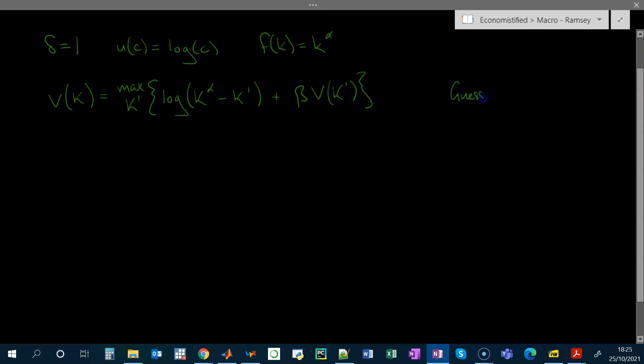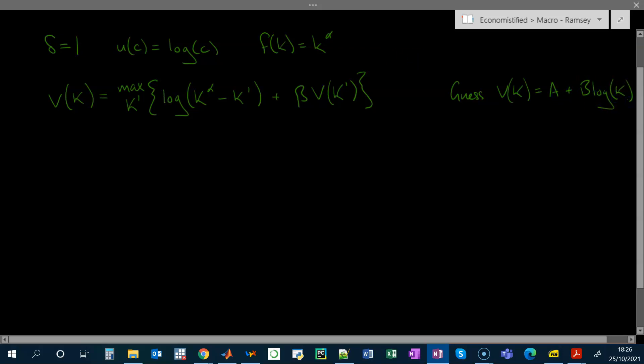I'm going to guess that the value function has this form: a constant plus something that is proportional to the logarithm of k. So this is the guess part. How do we do the verify? We verify by plugging in the guess into the Bellman equation, taking the first order condition, finding the optimal choice of capital, and then plugging that back into the Bellman equation. If the two sides still hold with equality, then our guess was correct, and that should give us the values of these parameters a and b.